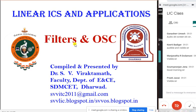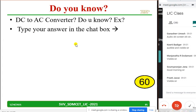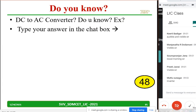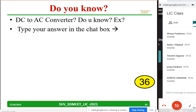Let us continue our discussion. Last class I asked this question: DC to AC converter — do you know? Last class many students wrote, and if somebody wants to write again or a different answer, they can type. You have one minute. A DC to AC converter — inverter is correct. Any other? Which you already studied in your lower semester. I think everybody is telling inverter.